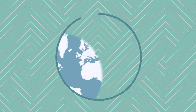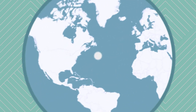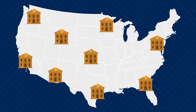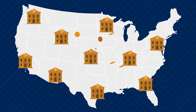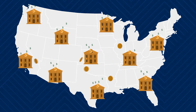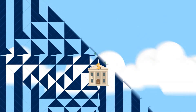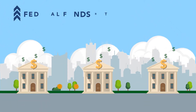The Federal Funds Rate is the interest rate that banks charge each other for overnight loans. It effectively acts as the base rate of interest for the United States, and its effects can ripple across the U.S. and beyond.